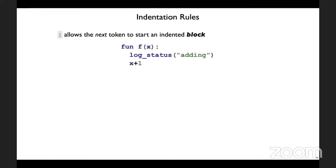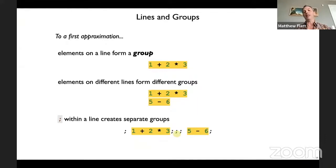By 'redundant' you mean they don't show up in the parse — that's what you meant. They don't show up in the parse, and they don't form empty groups that would show up in the parse either. So these three semicolons — there could be some groups between them — but there are no empty groups, so they just go away.